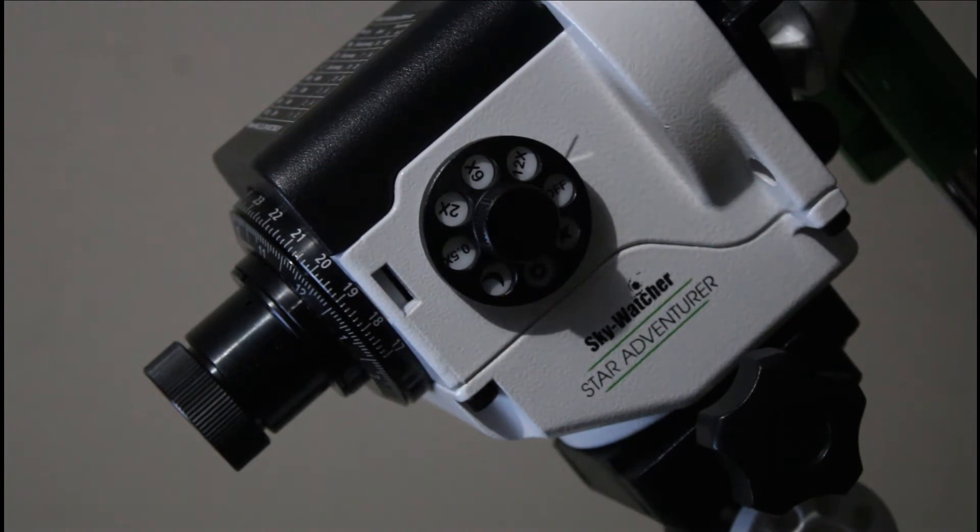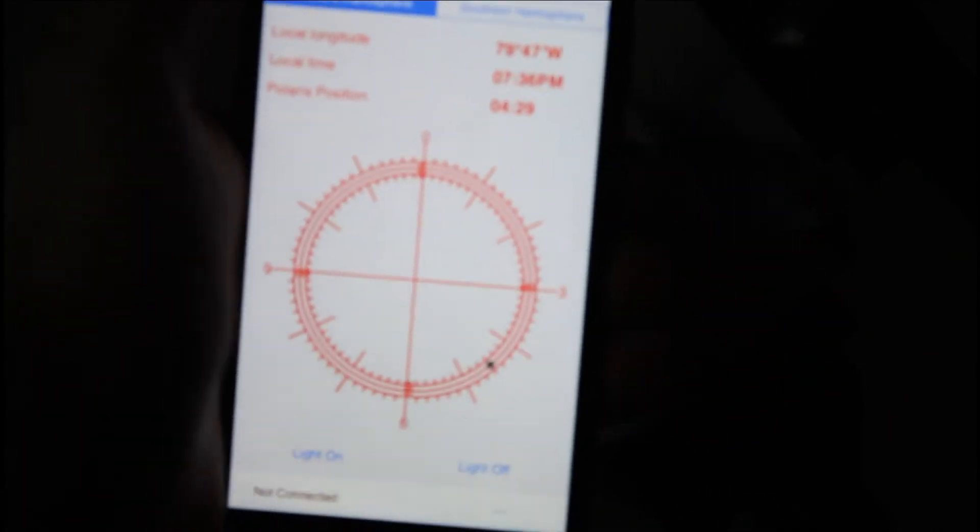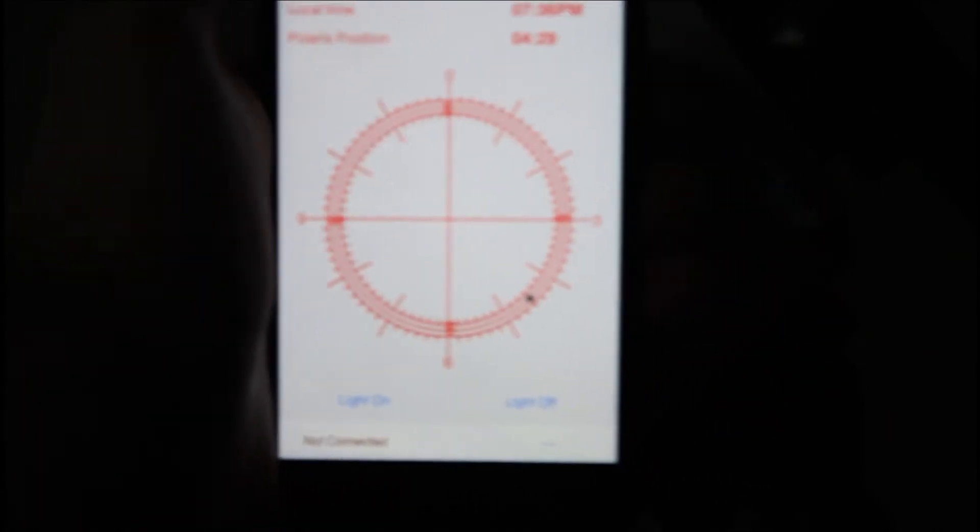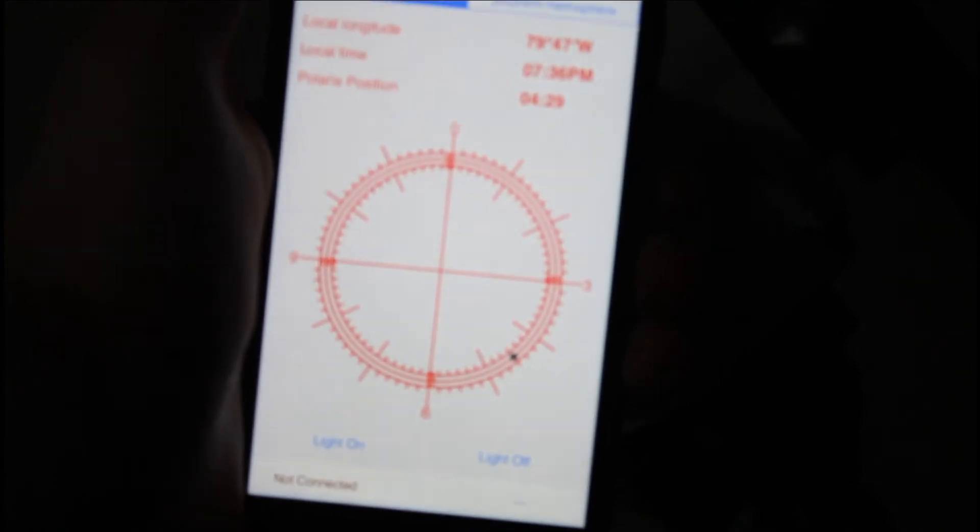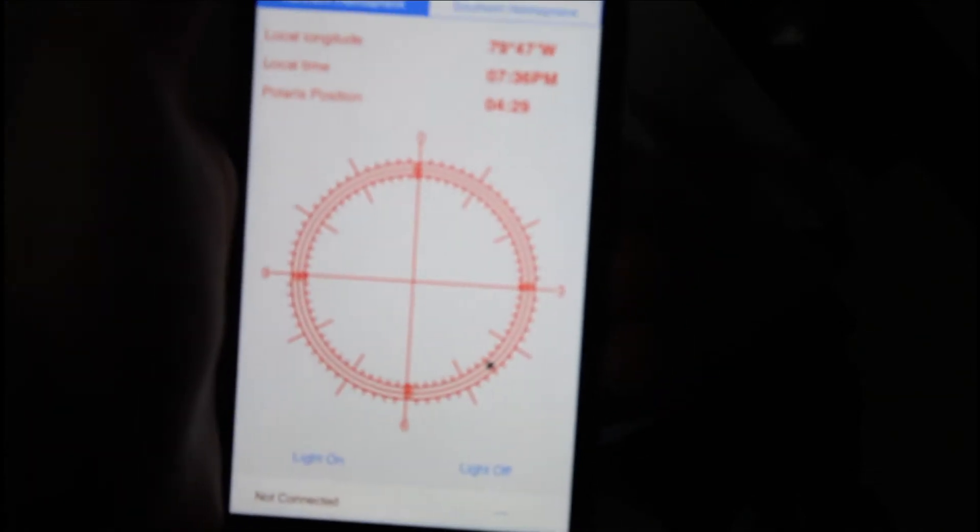So I'm going to try to explain this the best I can, because I'm really bad at explaining things. When you look through the polar scope, you'll see this reticle right here. This exact one. Pretty much on every Skywatcher mount, you're going to see this reticle. And that little black dot, that's Polaris. You should be able to see Polaris when you look through the scope if you're roughly north.